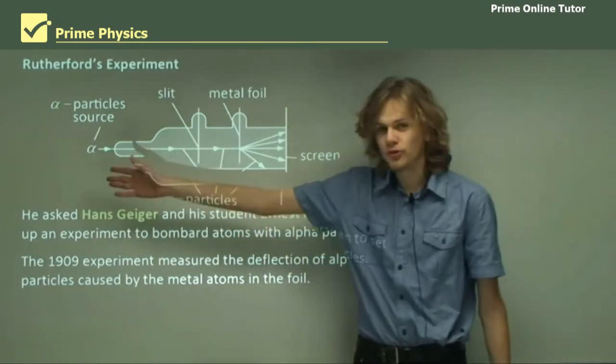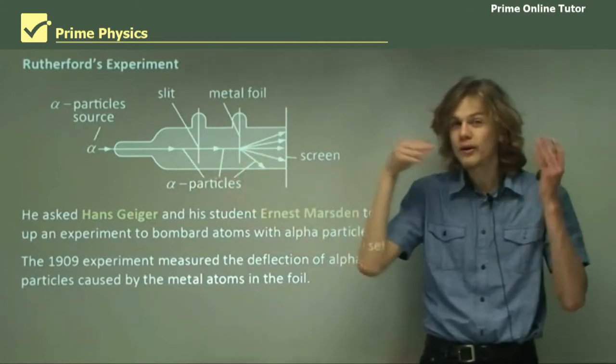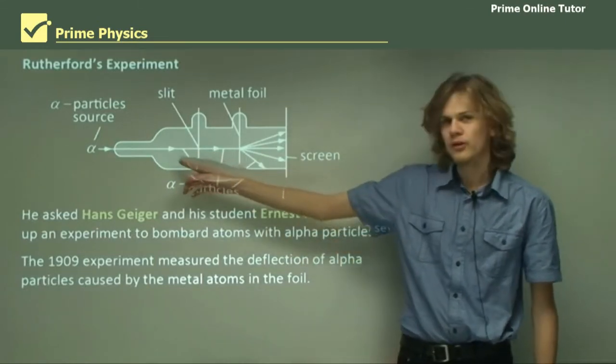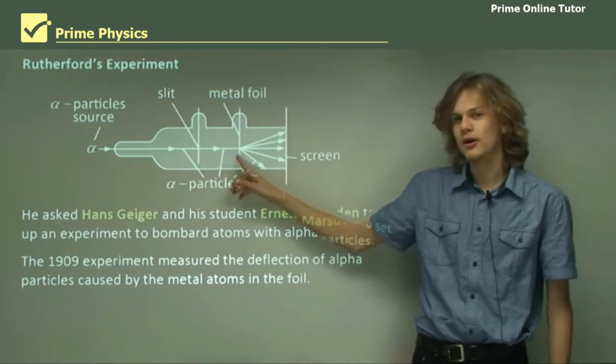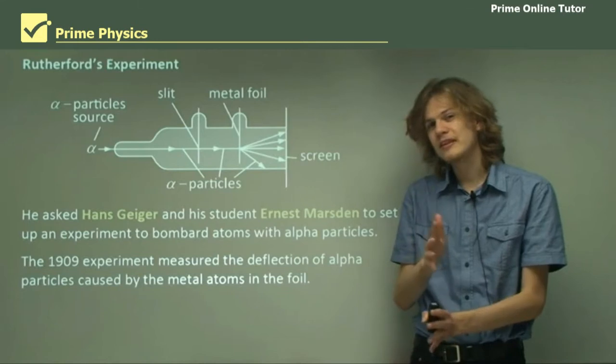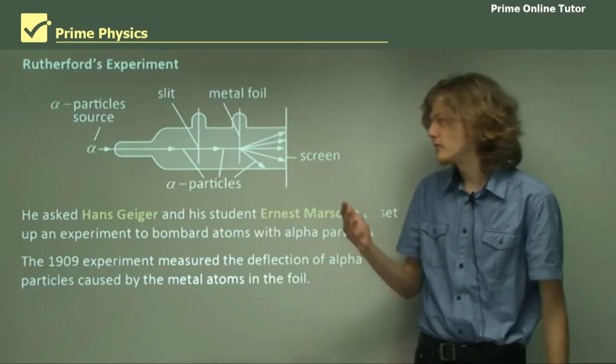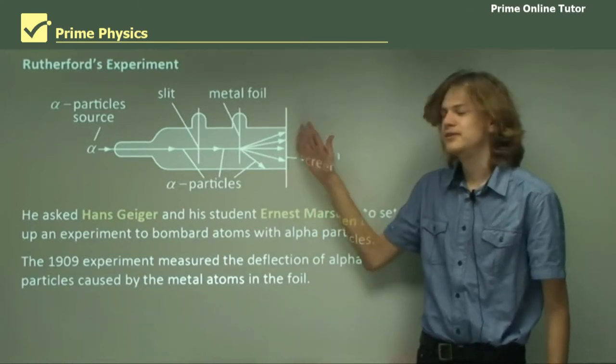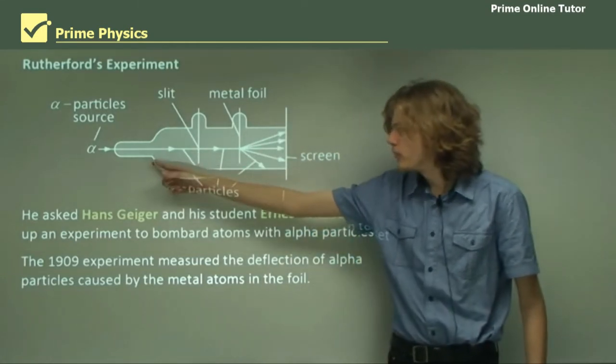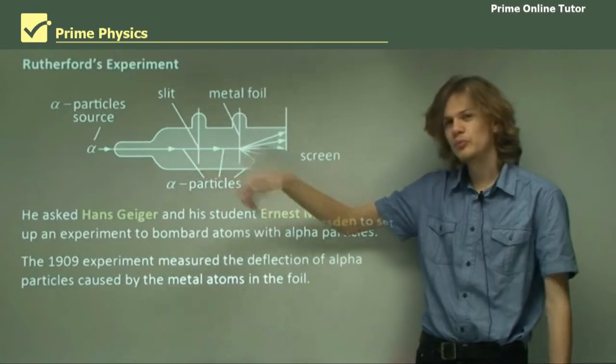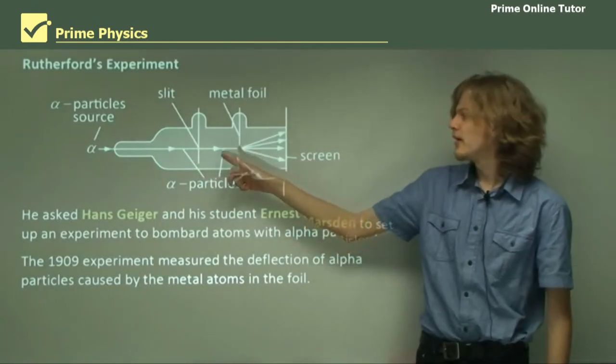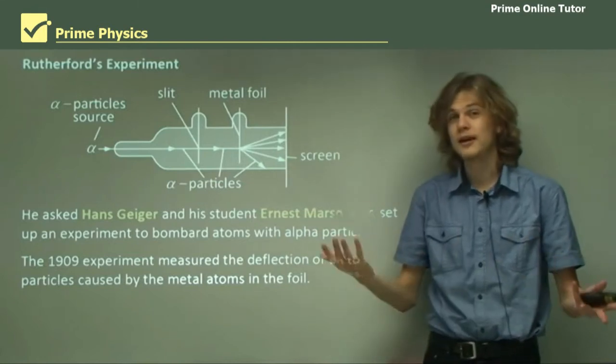We have an alpha particle source and a slit to make sure that they're all going in the same direction. When it gets to this point in the apparatus, it hits a metal foil, made of very, very thinly beaten metal, like gold, and then a screen to detect where the particles went after they hit the foil. The particles will, after going through the slit, presumably interact with the metal foil in some way, and then get knocked out and hit the screen where they can be detected.